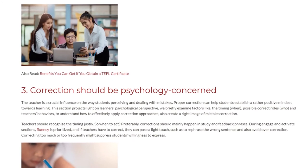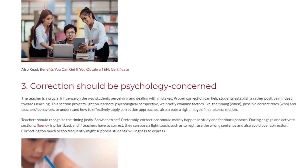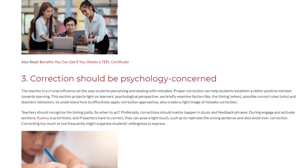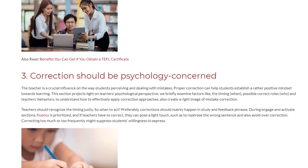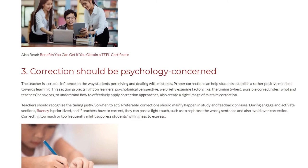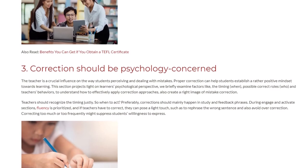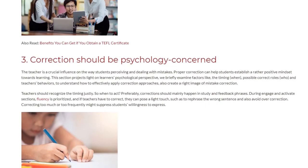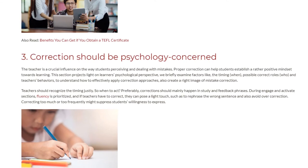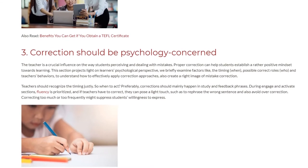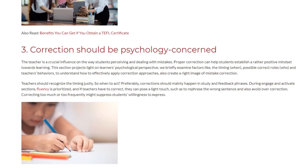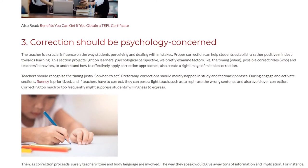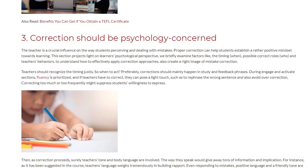We briefly examine factors like the timing of correction, correction roles — who corrects — and teachers' behaviors, to understand how to effectively apply correction approaches and create the right image of mistake correction. Teachers should recognize the timing justly. Preferably, corrections should mainly happen in study and feedback phases. During engage and activate sections, fluency is prioritized, and if teachers have to correct, they can pose a light touch, such as rephrasing the wrong sentence.